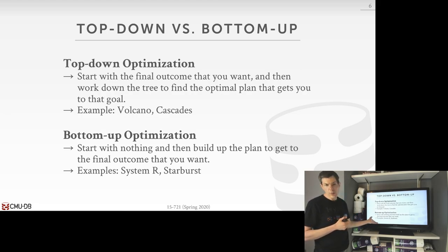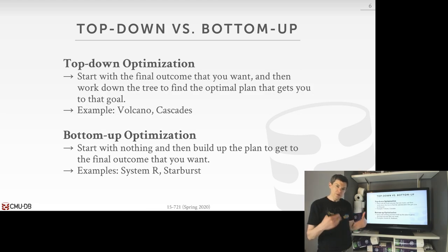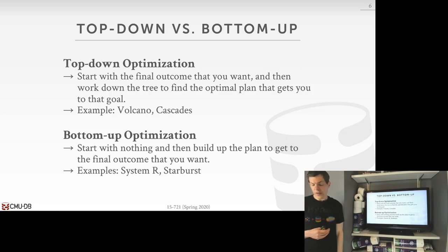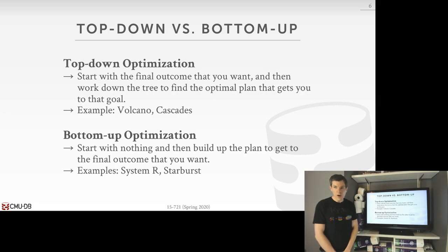The dynamic programming technique from System R is an example of bottom-up optimization, where you start with nothing at the bottom and literally add in the components or operators needed for the query plan to reach that end goal. The current literature suggests that dynamic programming bottom-up optimization is better — we'll talk a bit today about why that's the case.